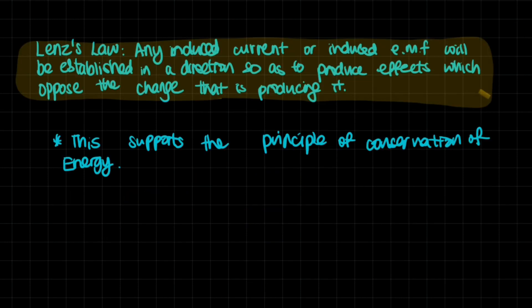To summarize Lenz's law: any induced current or induced EMF will be established in a direction so as to produce effects which oppose the change that is producing it. This supports the principle of conservation of energy. I hope this explanation of Lenz's law and Faraday's law was helpful. Check out other physics videos on the same level on the channel. Thank you for watching.